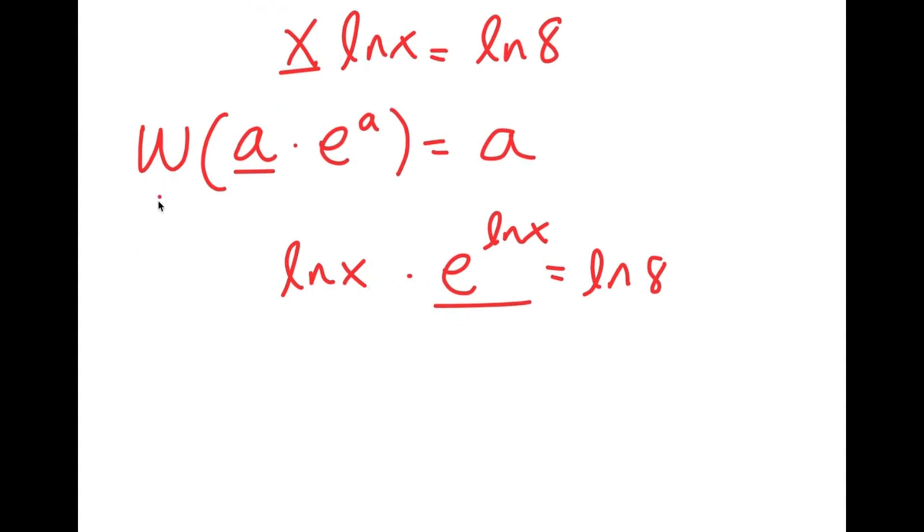So now I can use this formula. So I'm going to take the W on both sides. So I have W of ln x times e to the power of ln x is equal to what I have to do on one side,